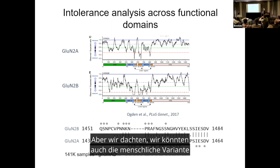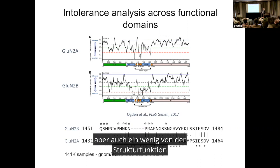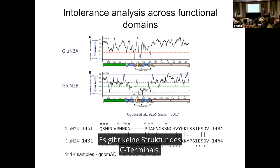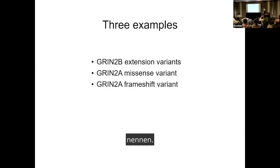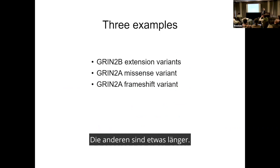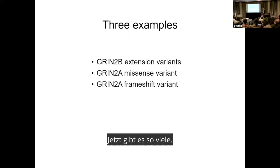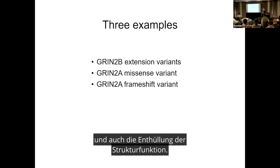We thought we could also use human variation to learn about synaptic dysfunction with disease, but also probe structure-function, because as you know from structural pictures, there's no structure determined on these C-terminal domains. So what I'm going to do is tell you three examples of how we went from having variants — now there are so many — to picking and choosing what could be most beneficial to the field, to patient populations, and also revealing of structure-function.